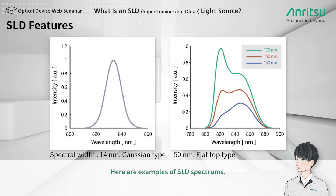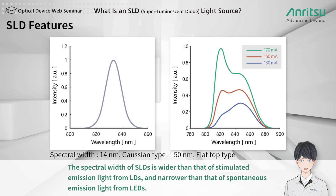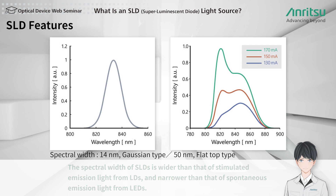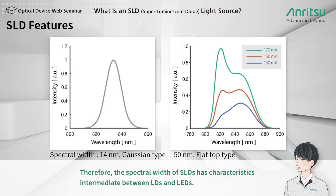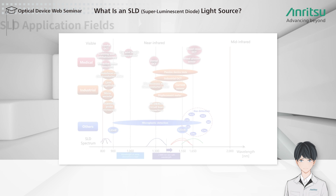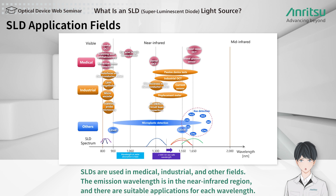Here are examples of SLD spectrums. The spectral width of SLDs is wider than that of stimulated emission light from LDs, and narrower than that of spontaneous emission light from LEDs. Therefore, the spectral width of SLDs has characteristics intermediate between LDs and LEDs.